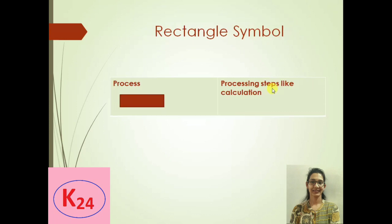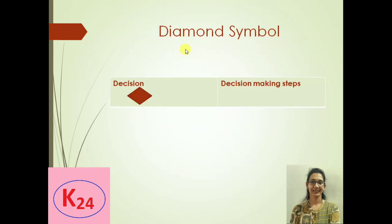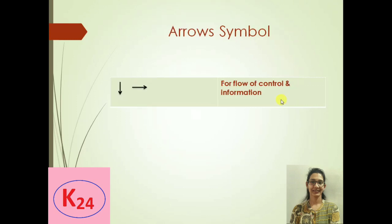The next symbol is the rectangle box, used for processing — meaning calculations like arithmetic operations or any other type of calculations. For the next symbol, the diamond box is used for decision making, representing yes/no or true/false questions, such as an if condition.